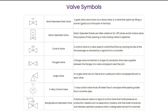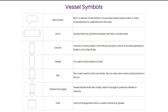These are different types of valve symbols. Valves are used to control the flow of any fluids or gases. Valves are of different types, for example: hand operated valve, motorized valve, angle valve, and back pressure operated valves. Vessels are used to store any fluid material, gases, or solid products such as powder, ash, etc.